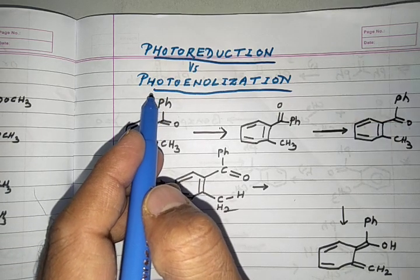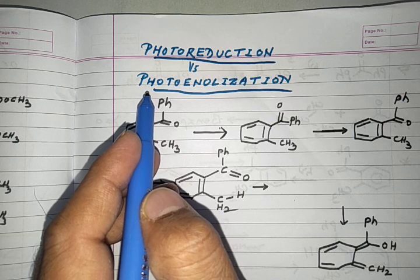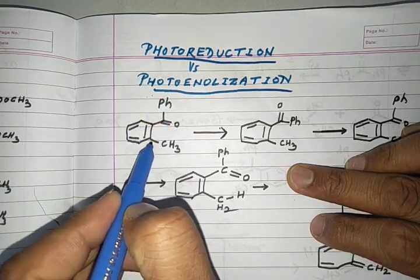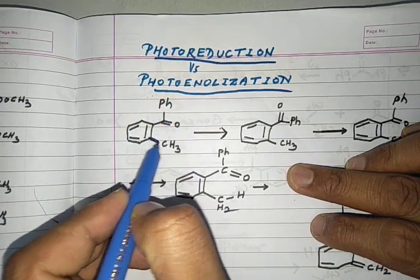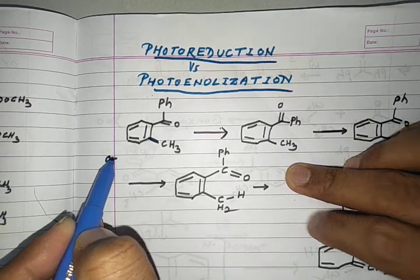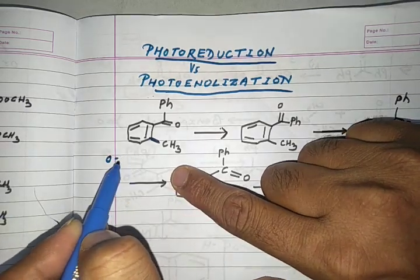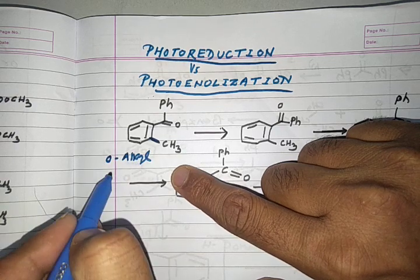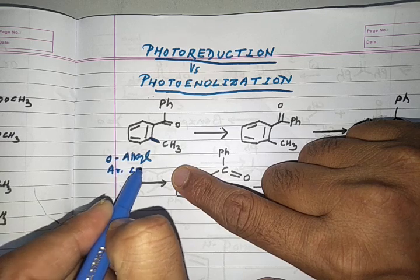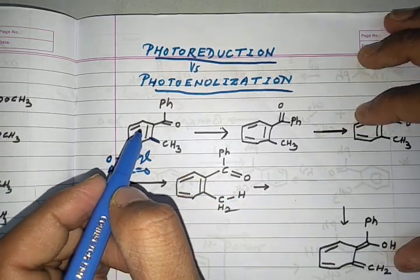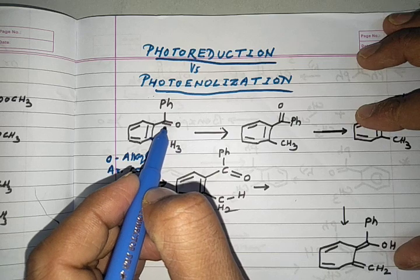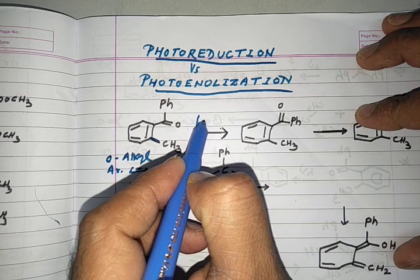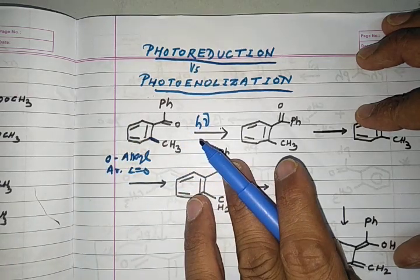The condition for photoenolization is an ortho alkyl substituted aromatic carbonyl compound. For example, ortho-methyl benzophenone — here the aromatic carbonyl compound has a methyl group at the ortho position. Generally, we write this as an ortho alkyl aromatic carbonyl compound.